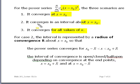It converges in an interval about x₀, or converges for all values of x. For scenario two, for case two here, the interval is represented again by R, which is called the radius of convergence, and it's about x₀. So the power series then would converge in the interval x₀ minus R to x₀ plus R.